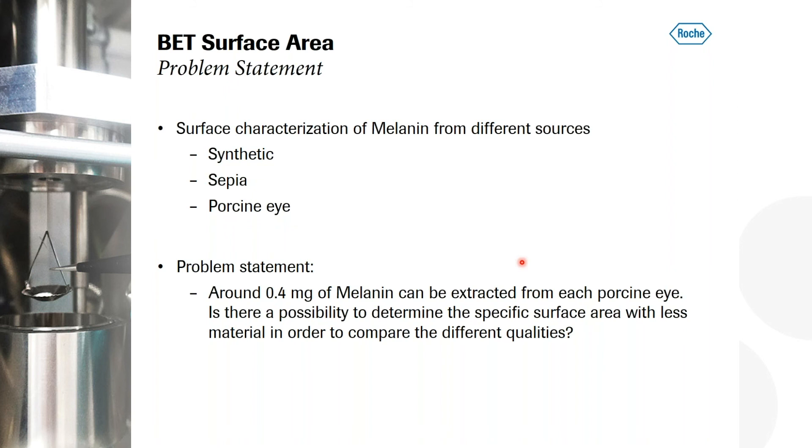And what they wanted to look at was they wanted to study the binding affinity of drugs on this melanin. Because this is typically within our eyes. And if you have orphan drugs, you want to have a binding inside your eye. And so this was one thing they wanted to look at. And therefore, they wanted to see the effect of the origin of their melanin source on their binding assays they developed. So the problem is from a porcine eye, you get roughly around four milligrams, the 0.4 milligrams of melanin. And the question was, is there any possibility to determine the specific surface area with less material than compared to these normal quantities that's typically used?